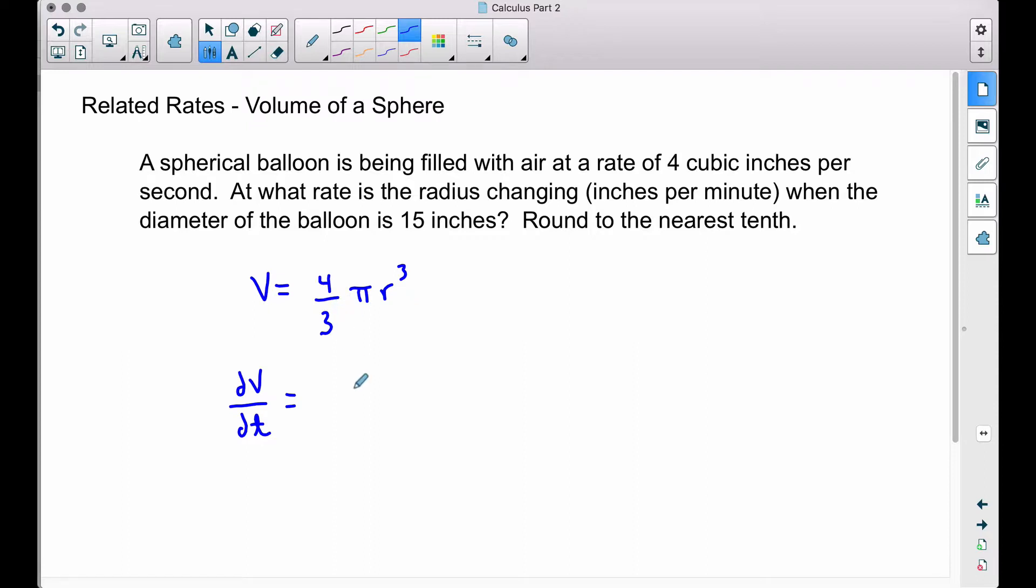That will cancel out the 3's, so therefore we have 4π r squared. Don't forget to subtract 1, and then let's tack on our dr/dt since we are differentiating with respect to time.